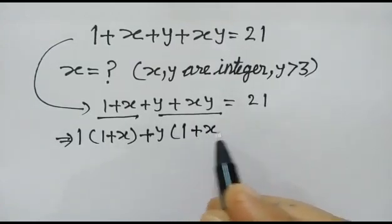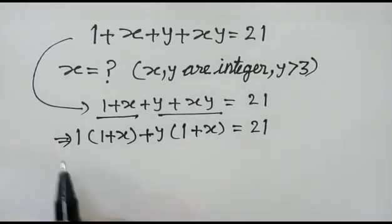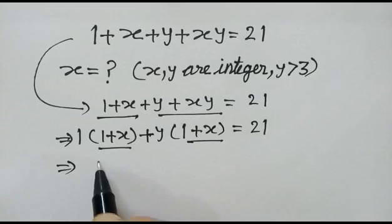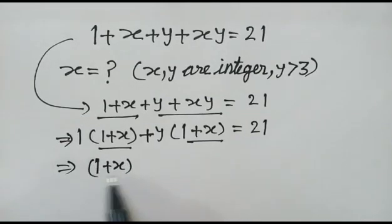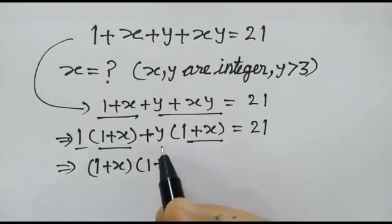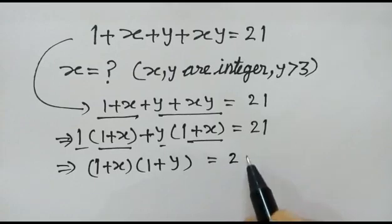1 plus x is equal to 21. 1 plus x, 1 plus x common, so remaining 1 plus y is equal to 21.